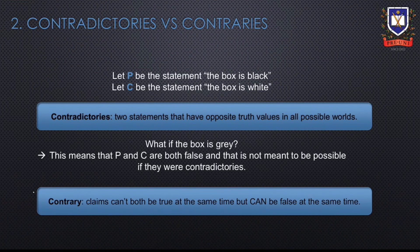In this slide, we will be looking at the difference between contradictories and contraries. Let P be the statement 'the box is black' and C be the statement 'the box is white.' Contradictories are two statements that must have opposite truth values in all possible worlds. But what if the box is grey? Then claims P and C are both false, which would not be possible if they were contradictories. These two claims are called contraries. Contraries are claims that can't both be true at the same time, but can both be false at the same time.